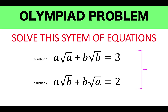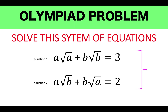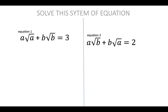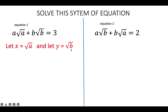Find the values of A and B. Pause the video and solve this problem first. Now let's solve this problem together. Let's do some substitution. We let X be equal to the square root of A, and we let Y be equal to the square root of B.